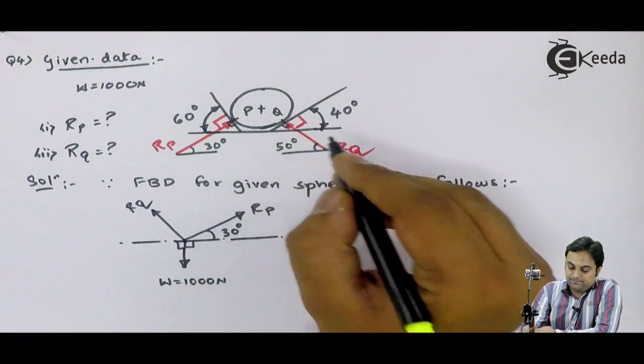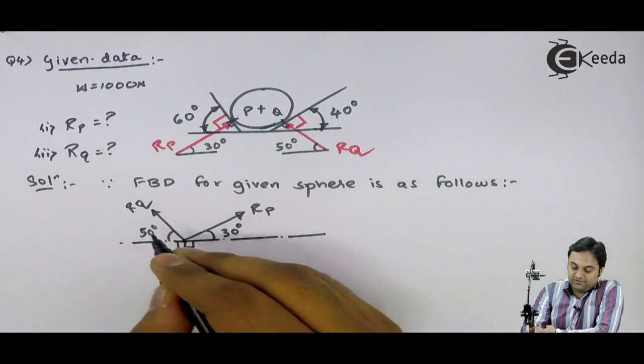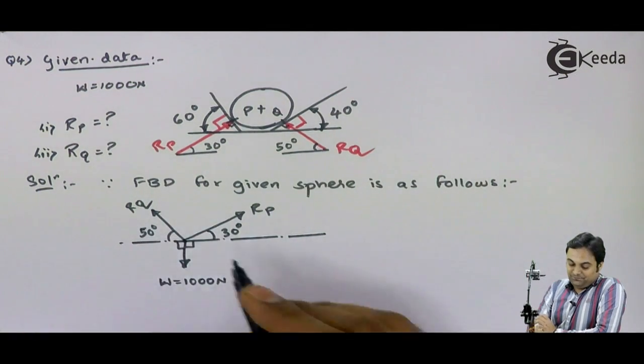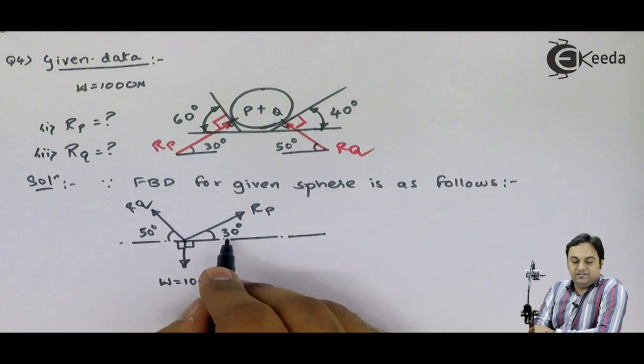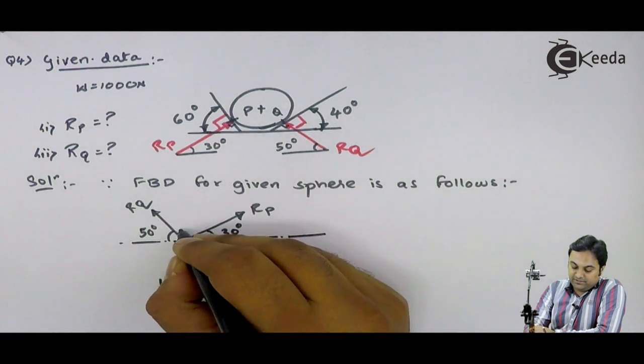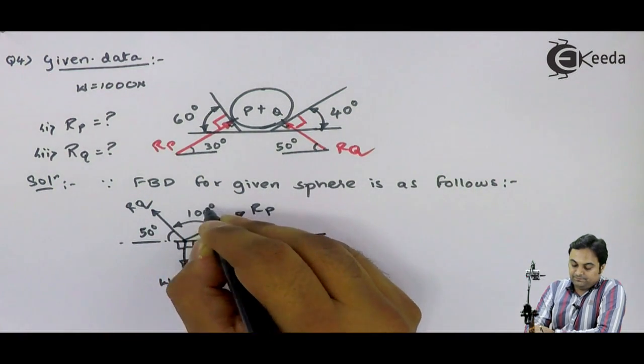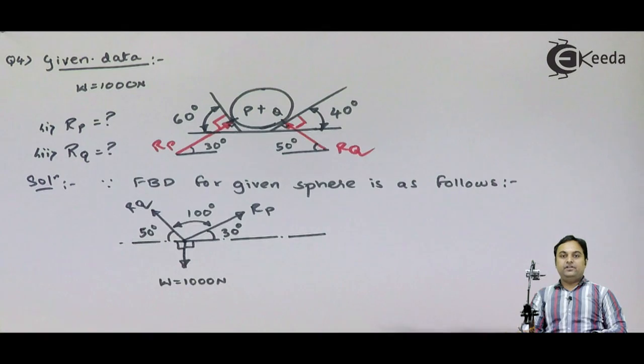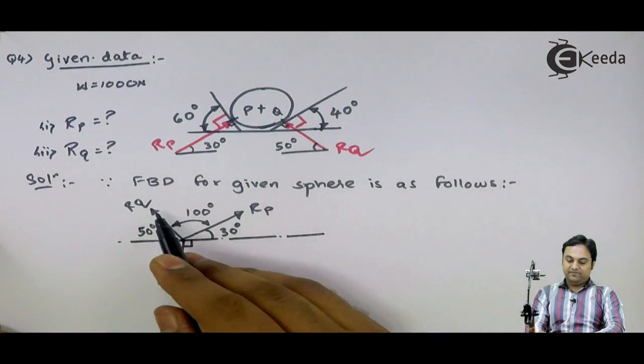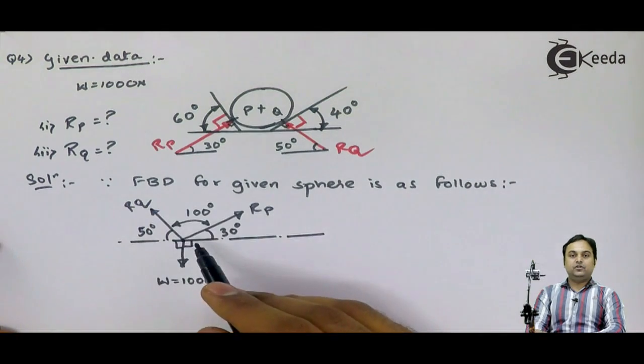Here I have 50 and this is 30, so it is 50 plus 30 that gives me 80. The remaining angle between RP and RQ is 100 degrees. In this problem we know the forces and the angles between all of them, so I can easily apply Lami's theorem here.